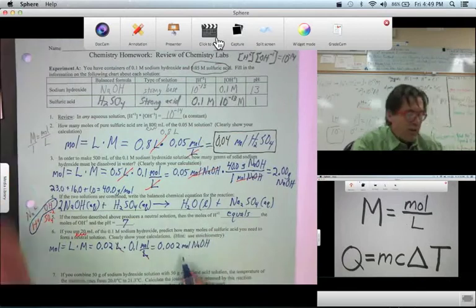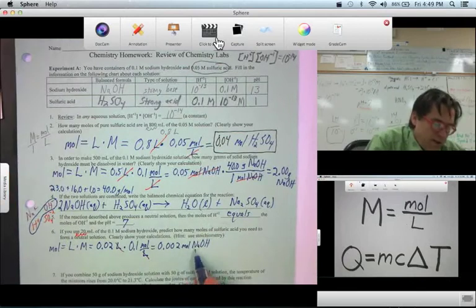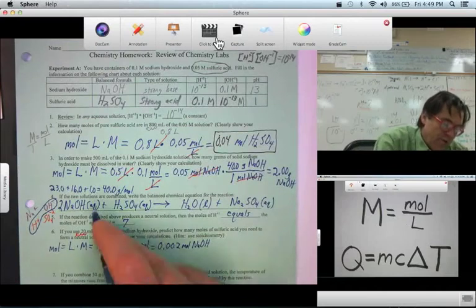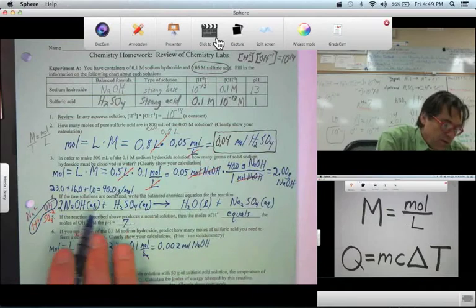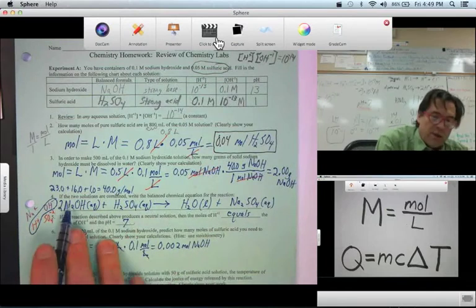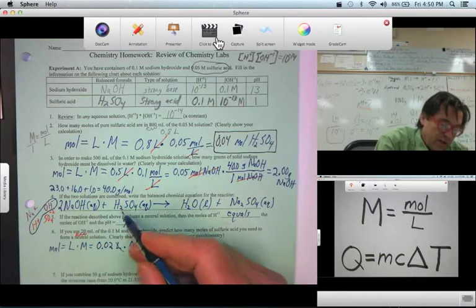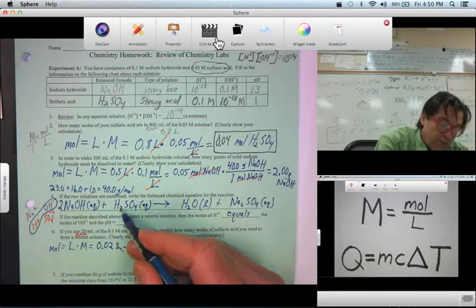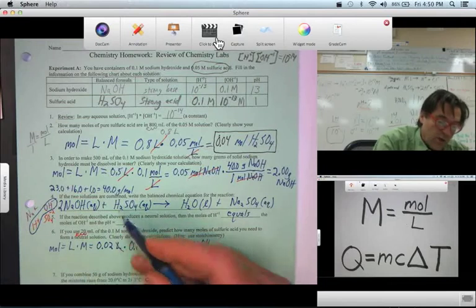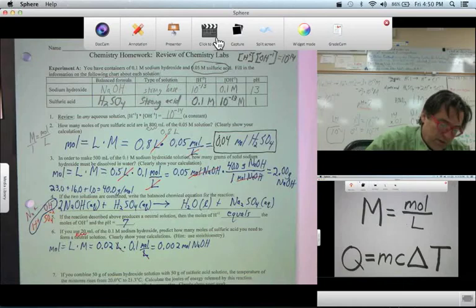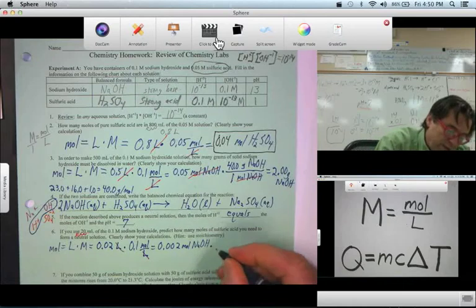And now, the stoichiometry to answer the question, how many moles of sulfuric acid we need to form a neutral solution? Well, that would use this ratio in our balanced chemical equation. For every two moles of NaOH, we only need one mole of H2SO4 because it produces two H+s in solution. It is a diprotic acid, donates two protons. So I'm going to change colors just so that the mole or mole ratio stands out.